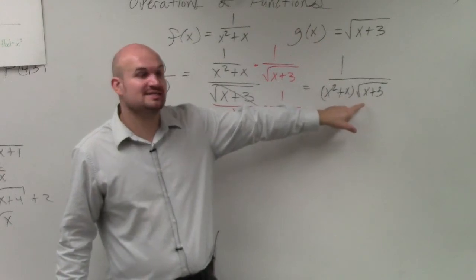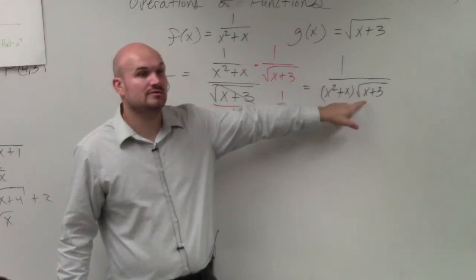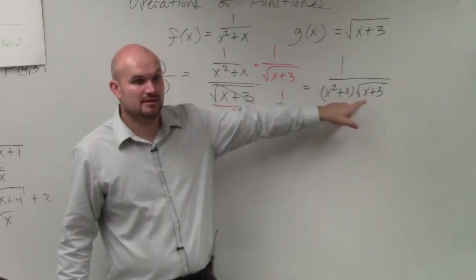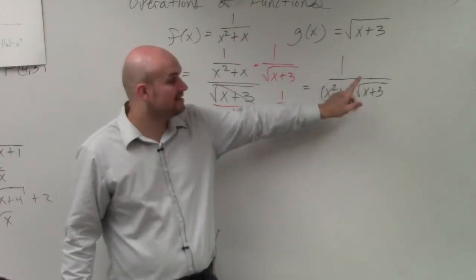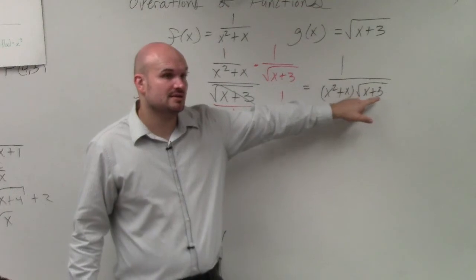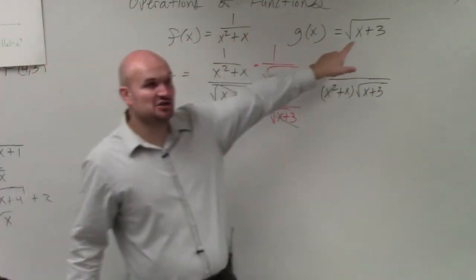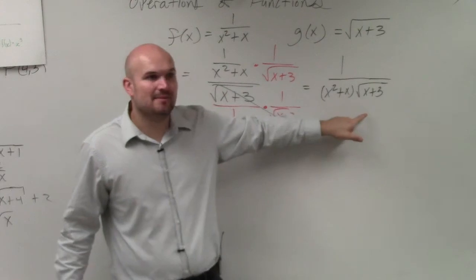Here we said x has to be greater than or equal to negative 3. But what happens if it's negative 3? Watch: negative 3 plus 3 is 0, which was okay when that was in the numerator, but now that's in the denominator.